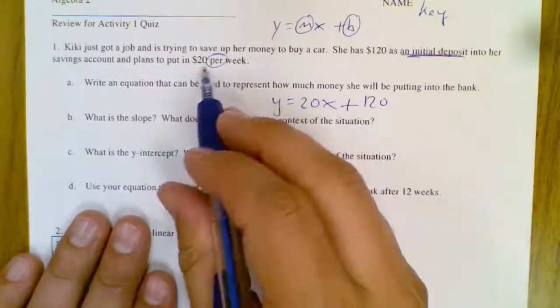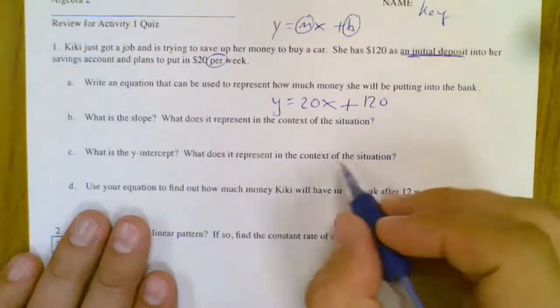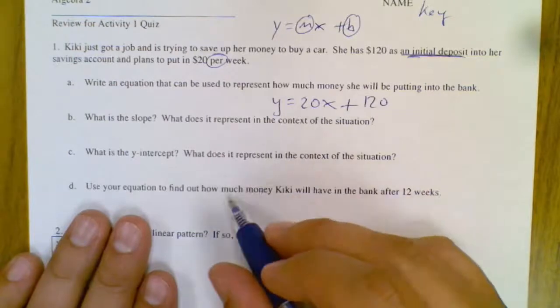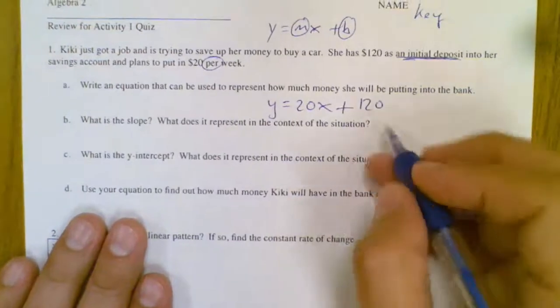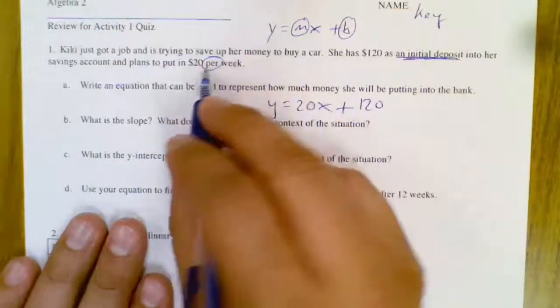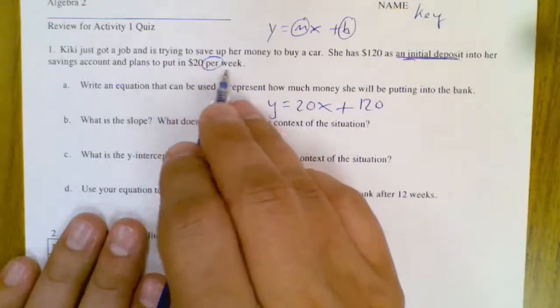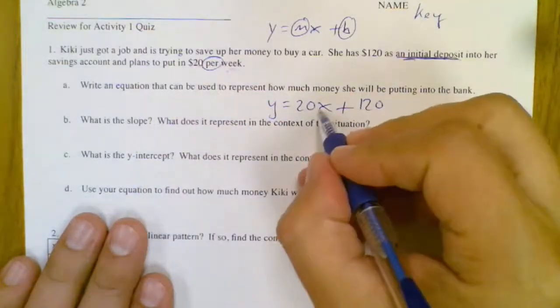Your slope has the word per on it, your initial amount is 120. Now I always like to say what each letter means. So in this problem, this is per week, so the weeks goes with 20. So x is weeks.